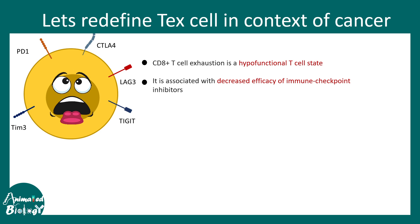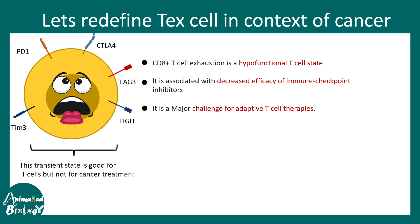CD8-positive T cell exhaustion leads to a hypofunctional T cell state, which results in decreased efficiency of immune checkpoint inhibitors. Specific immune checkpoint pathways are abrogated in these conditions, and this is a major obstacle for adaptive T cell therapies. Interestingly, this transient exhausted state is protective for the T cells themselves — preventing them from dying via apoptosis. It is a state of neutrality: good for the T cell, but bad for the patient.